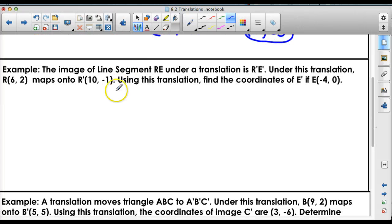Let's look at number 2. It says the image of line segment RE under a translation is R prime, E prime. Under this translation, R, so our first R, maps or slides or moves to R prime, which is (10, -1). Using this translation, find the coordinates of E prime if E is (-4, 0). So it's the same thing. We have to figure out what translation gets us from here to there. So once again, we just do the same thing. We start with a 6, and we do something to it to give us a 10. And then we start with a 2, and we do something to it to give us a -1. Well, to get to 10, I'll write it in a different color so you can see. We obviously added 4, right? 6 plus 4 is 10.